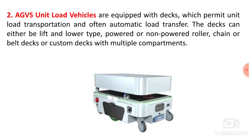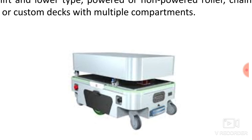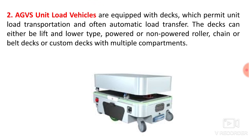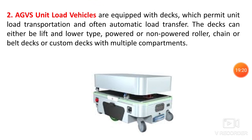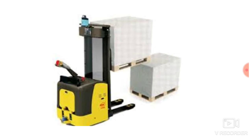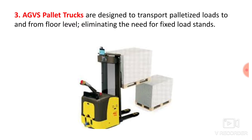The second type is the AGV unit load vehicle, which is equipped with a deck that permits unit load transportation and often automatic load transfer. The decks can either be lifted or lowered, powered or non-powered, with roller, chain, or belt conveyors, or custom decks with multiple compartments. The third type is the AGV pallet truck, which has two forks to lift pallets. AGV pallet trucks are designed to transport palletized loads to and from floor level, eliminating the need for fixed load stands.